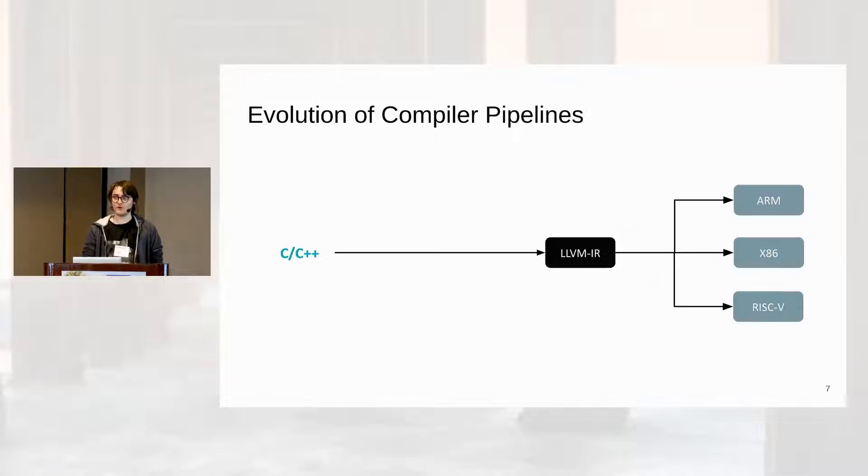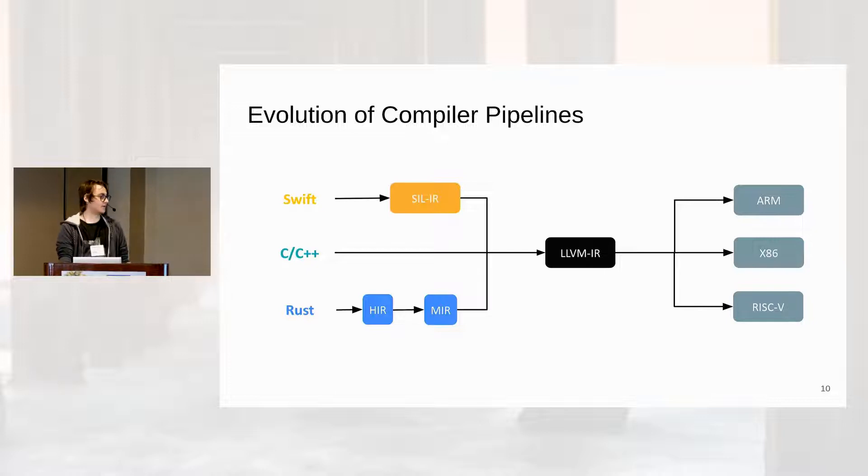This also allows you to essentially retarget other architectures such as ARM or RISC-V, and this also goes the other way around since now you can try to target LLVM IR from other languages like Swift. You have more modern languages that also have high-level intermediate representations for their own compiler, like Swift or Rust. Essentially, we're getting more and more intermediate representations.